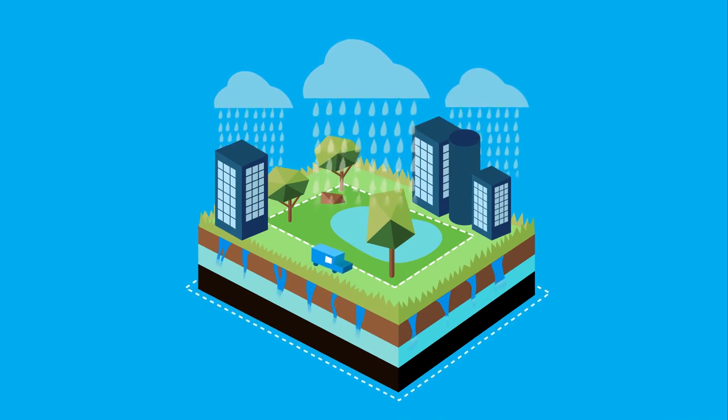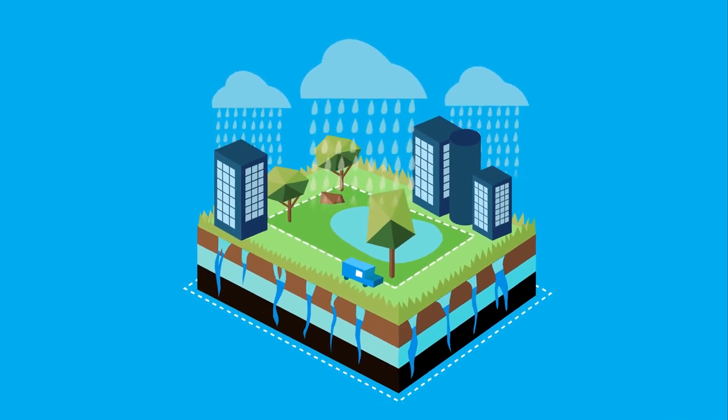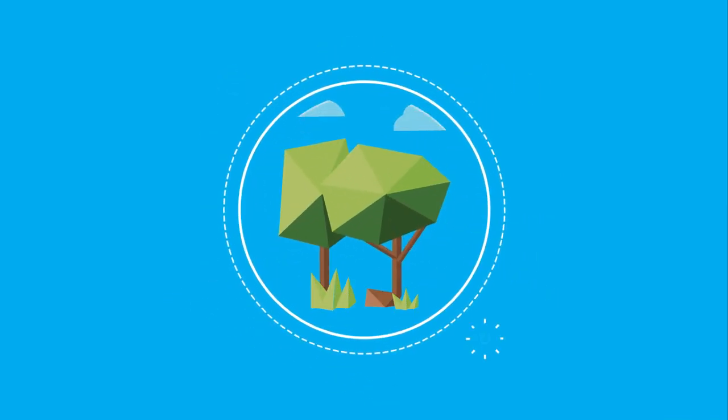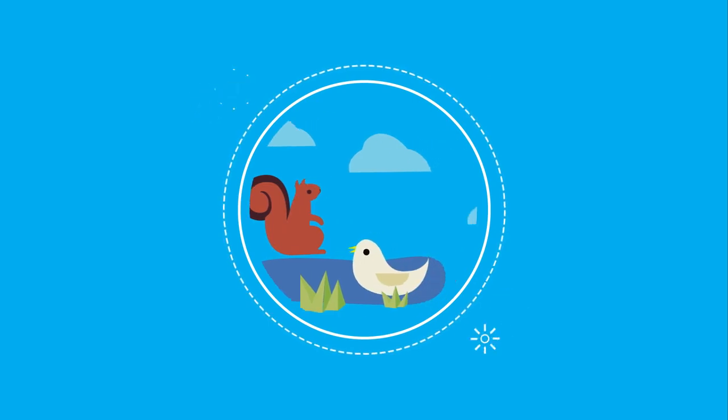Parks can act like sponges when rain falls. They catch stormwater, absorbing it into the earth and returning it to thirsty plants, animals, and eventually people.